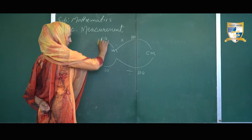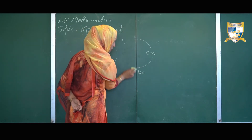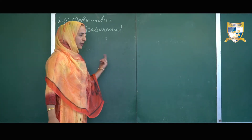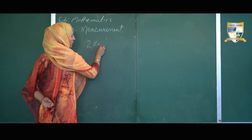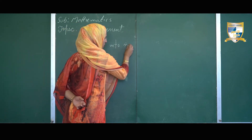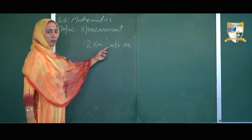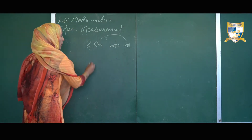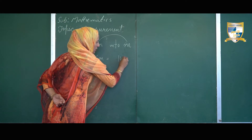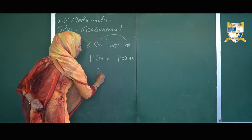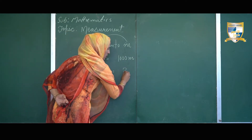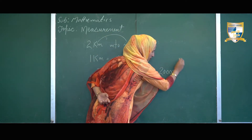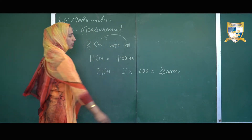Let us go for the conversion of units of length. I will take an example: convert 2 kilometers into meters. We have to convert a higher unit into a lower one. As we know, 1 kilometer consists of 1000 meters. So 2 kilometers equals 2 multiplied by 1000, that is equal to 2000 meters. Here we have converted 2 kilometers into 2000 meters.